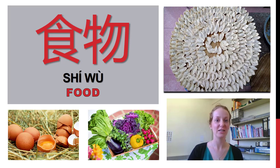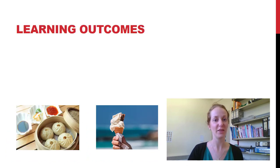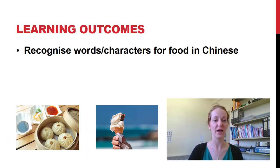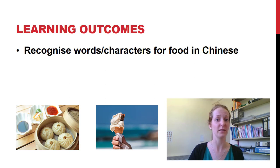大家好! 食物 — foods. 食物. The learning outcomes for this video are to recognize words and characters for food in Chinese. We're gonna go through the foods quite quickly, so you can always refer back or get on Quizlet to practice those words.